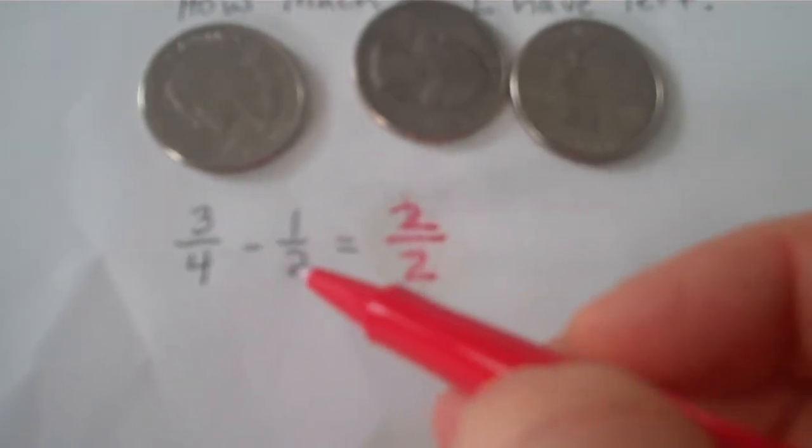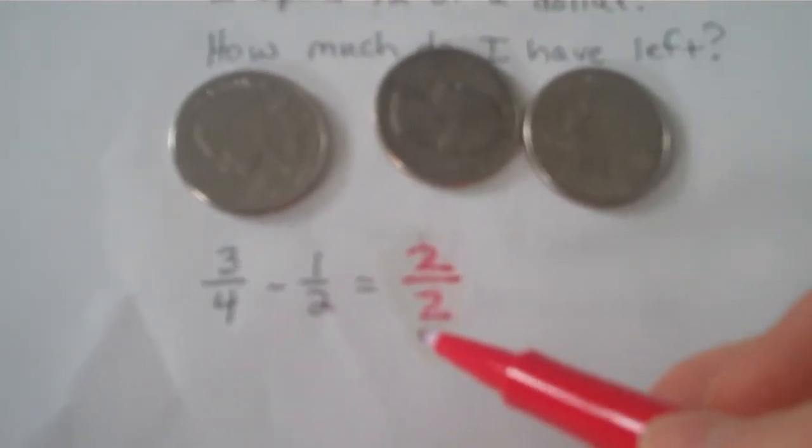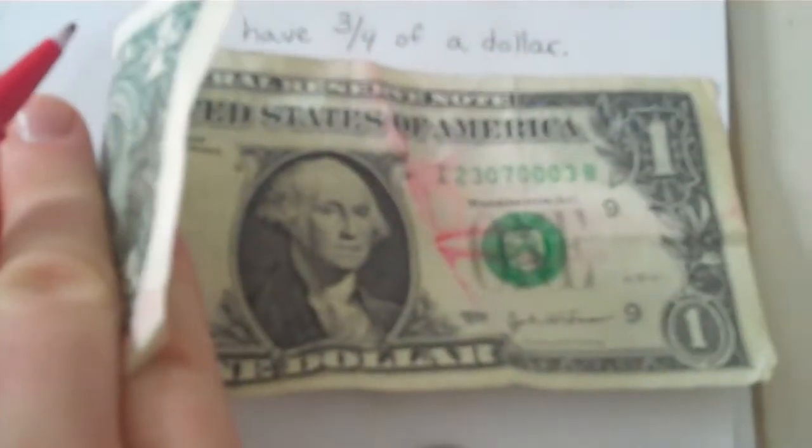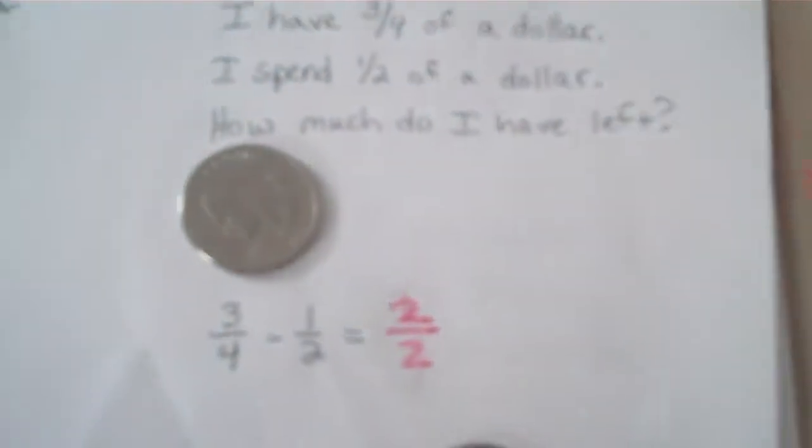Three minus one is two. Four minus two is two. A whole dollar? 75 cents minus 50 cents equals a dollar? No. That's crazy. It obviously equals one fourth of a dollar.